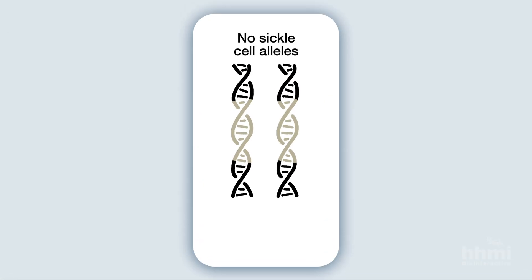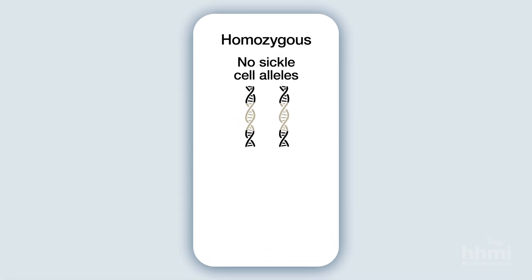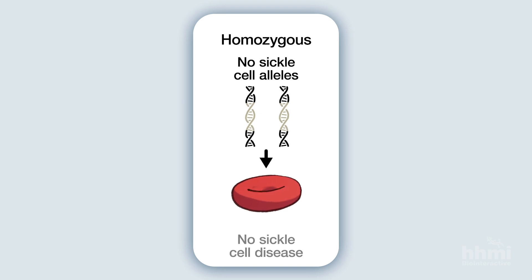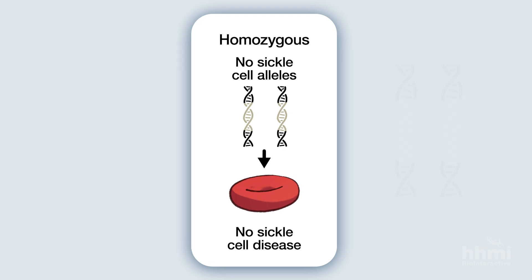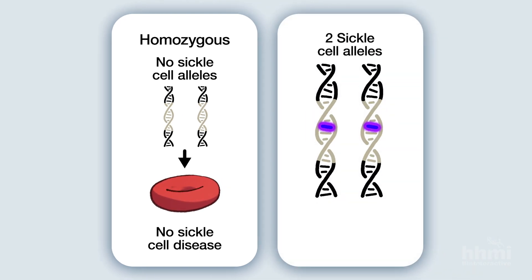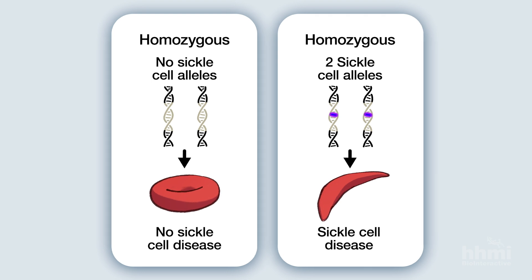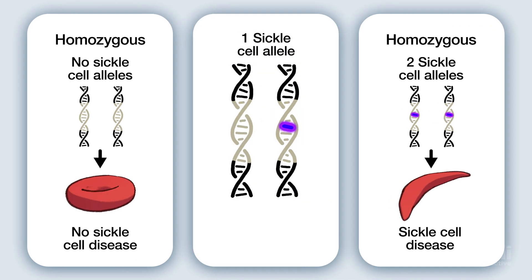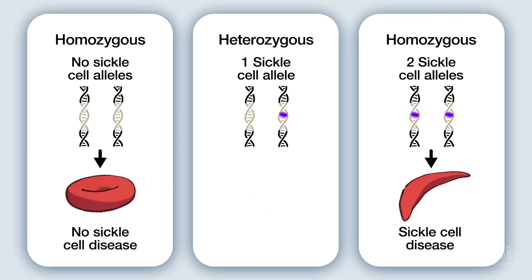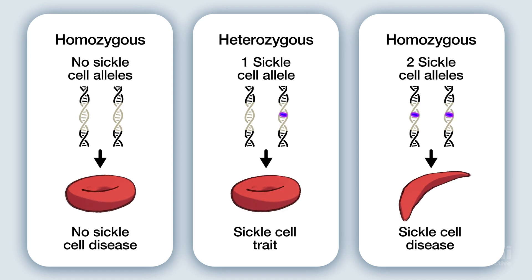People with two copies of the allele without the sickle cell mutation are homozygous, meaning their alleles are the same. They have round red blood cells and don't have sickle cell disease. People with two copies of the allele with the mutation are also homozygous for the sickle cell allele — many of their red blood cells are sickled and they have sickle cell disease. People with one sickle cell allele and one normal allele are heterozygous and have what scientists call sickle cell trait. Under most circumstances, their red blood cells are round and they don't have any symptoms.